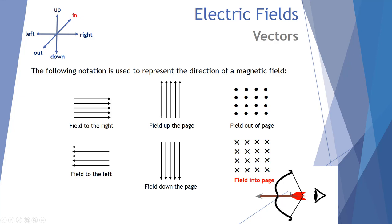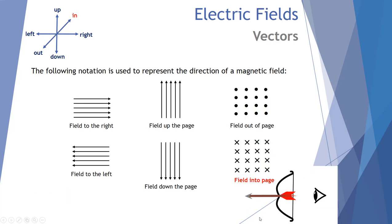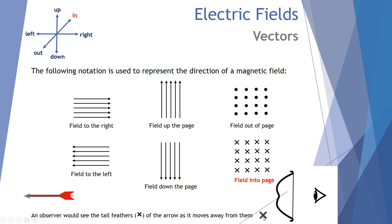For a field going into the page, we use a cross. Looking from behind an arrow shooting away from you, you'd see the tail feathers — the crosshairs — getting smaller. So a cross represents the back end of an arrow going into the page. These crosses represent magnetic field lines moving into the page, whereas the dots represent field lines coming out of the page.